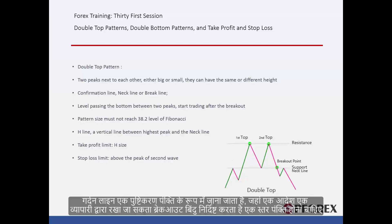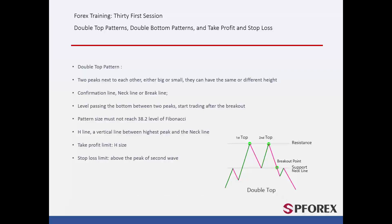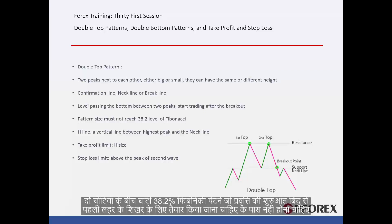The neckline, known as confirmation line, must be a level line that specifies the breakout point where an order can be placed by a trader. The valley between two peaks must not pass the 38.2% of the Fibonacci pattern, which should be drawn from the beginning point of the trend to the peak of the first wave.